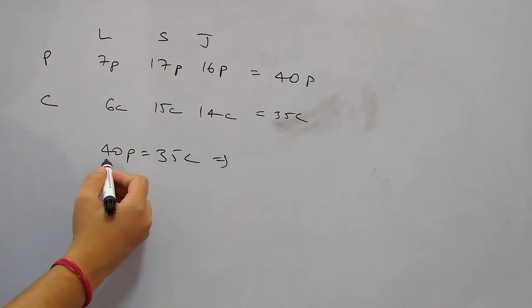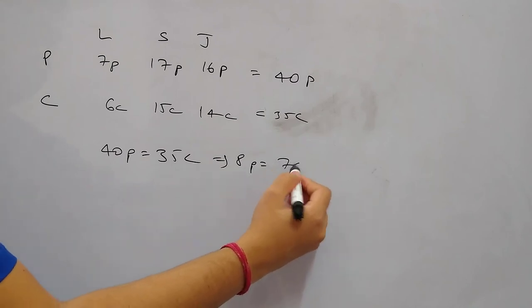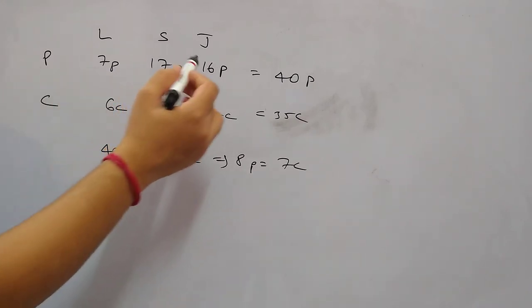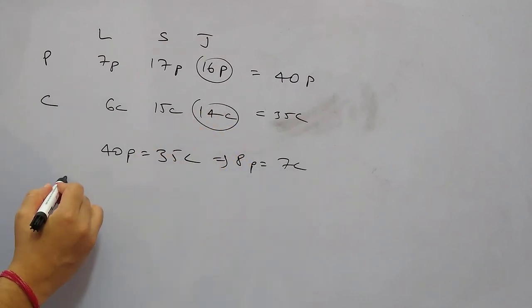So from here we have 8p equals to 7c. So we need to find out the number of jumbo popcorn packets and jumbo chips packet ratio. Jumbo popcorn packets is 16p and jumbo chips packet is 14c. So the required ratio would be 16p by 14c.